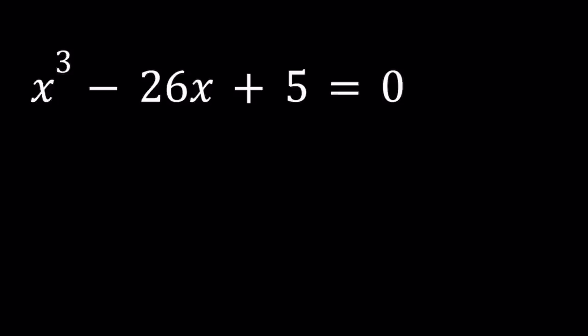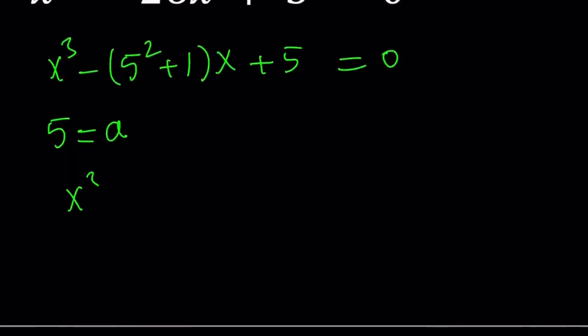I'm going to do a little weird stuff here. I'm going to use substitution. I'm going to turn it into a parametric equation. First of all, notice that 26 can be written as 5 squared plus 1. And then I'm going to replace 5 with a variable. So let's go ahead and replace 5 with a.